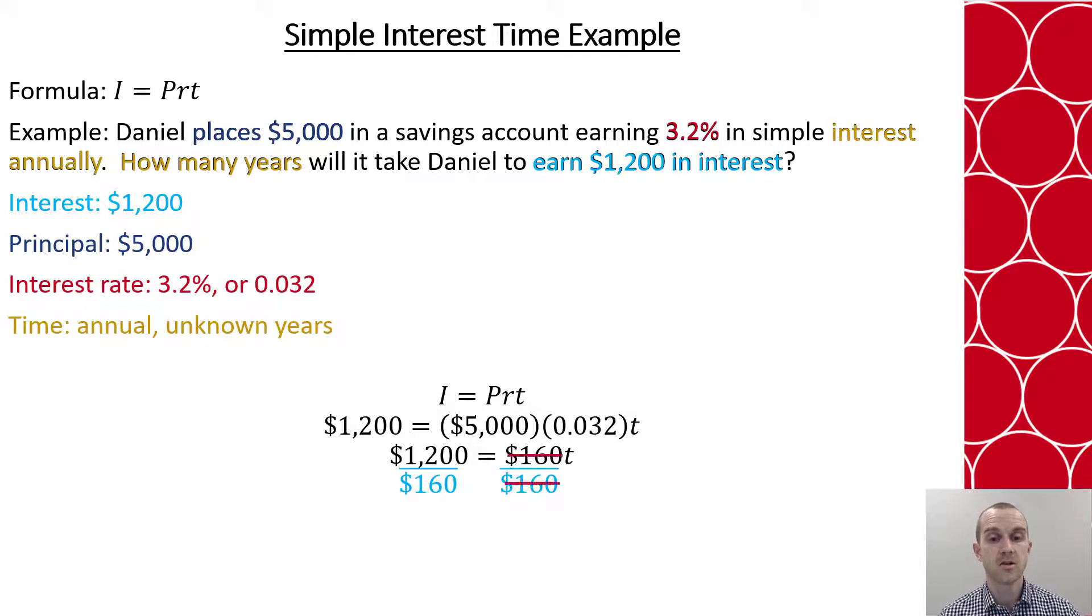So $160 divided by $160 will simplify to 1, and $1,200 divided by $160 will be 7.5. What this means is that Daniel will earn $1,200 in interest over 7.5 years, and that's if no money is deposited or withdrawn on this $5,000.